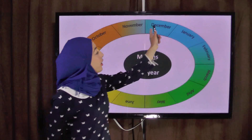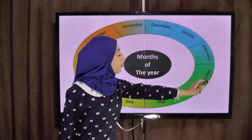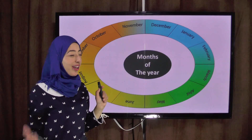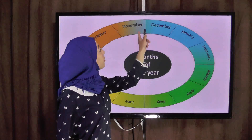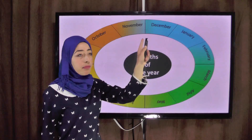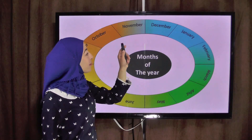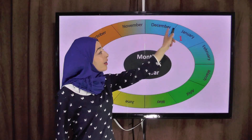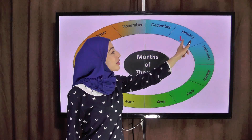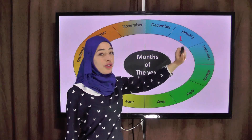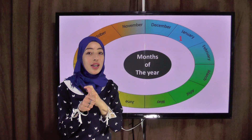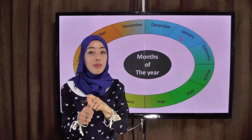Now, here, if you have noticed the colors — we covered colors before. It starts from January. January is the first month of the year.